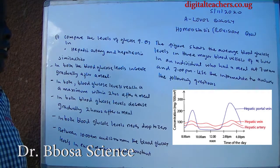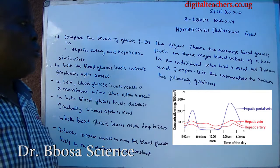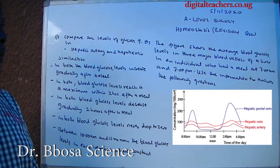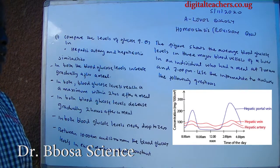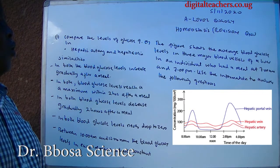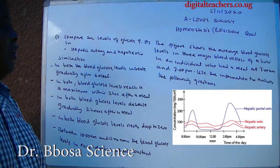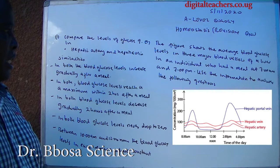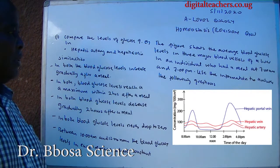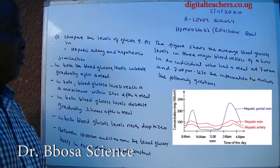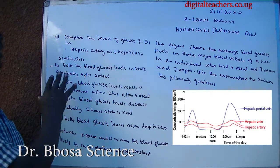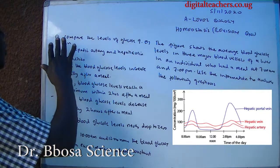The figure shows the average blood glucose level in three major blood vessels of a liver in an individual who had a meal at 7 a.m. and 7 p.m. Use the information to answer the following questions.